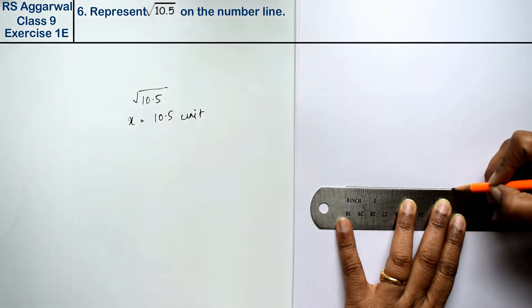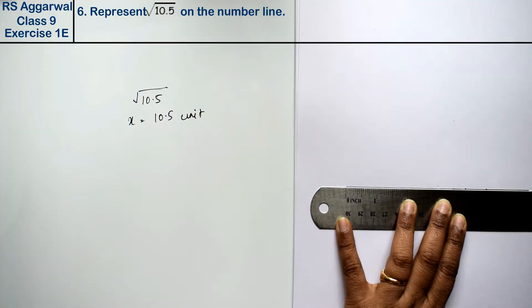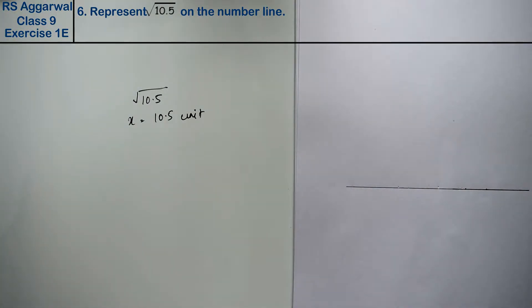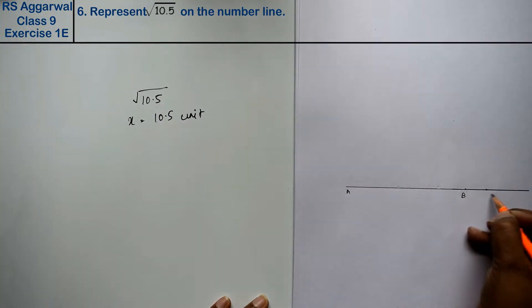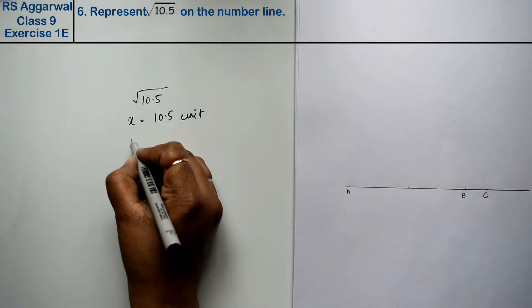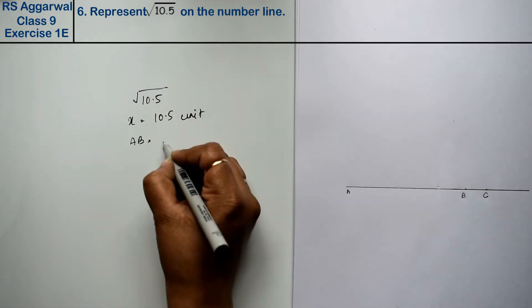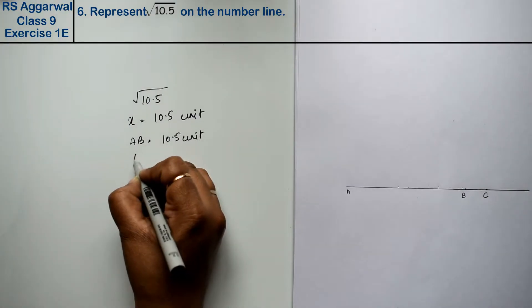This becomes our B point. This is one unit to C, and this is our extended line. So this is A, B, and C. Now we know that AB equals 10.5 units and BC is one unit extended line.